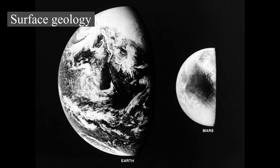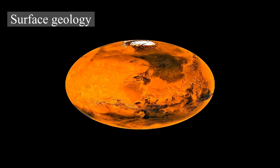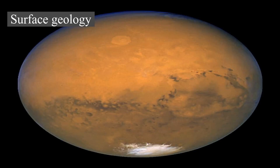There is evidence of an enormous impact basin in the northern hemisphere of Mars, spanning 10,600 by 8,500 kilometers — roughly four times the size of the Moon's South Pole–Aitken Basin, the largest impact basin yet discovered. This theory suggests that Mars was struck by a Pluto-sized body about four billion years ago, an event thought to be the cause of the Martian hemispheric dichotomy, creating the smooth Borealis Basin that covers forty percent of the planet.